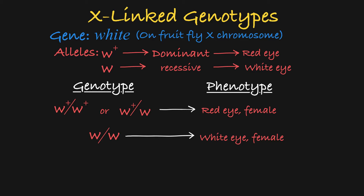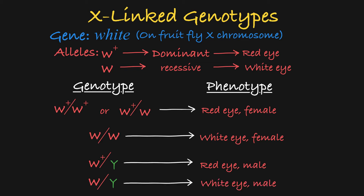In males, you only have one white gene in the genome, so the phenotype will be dependent on just the one allele present. A male with a W-plus allele on his X chromosome will have red eyes, and a male with the recessive W-allele on his X chromosome would have white eyes.